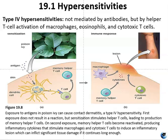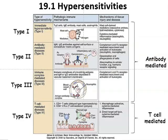Figure 19.8 shows examples of type 4 hypersensitivities. Remember, these are not mediated by antibodies but by helper T cells, which activate macrophages, eosinophils, and cytotoxic T cells. An example is being exposed to poison ivy, which causes contact dermatitis — a type 4 hypersensitivity. A summary table shows the different types of hypersensitivities, their immune mechanisms, and the types of injury and symptoms they cause. Types 1, 2, and 3 are all antibody-mediated; type 4 is T cell mediated.